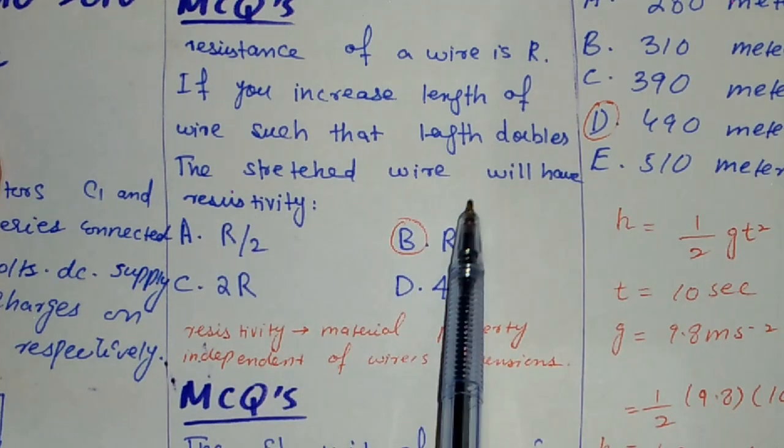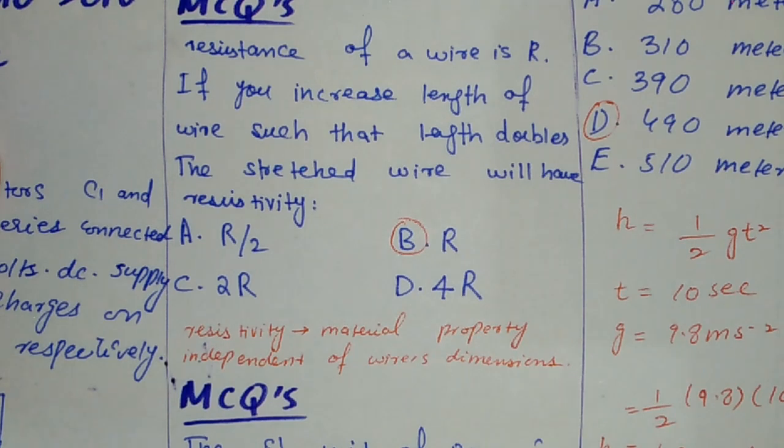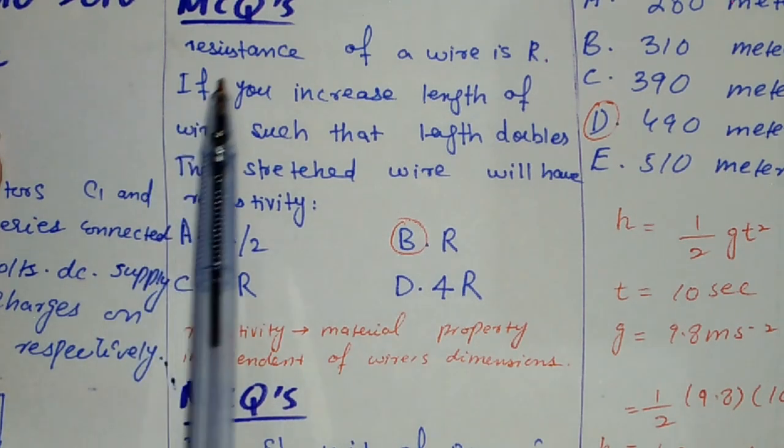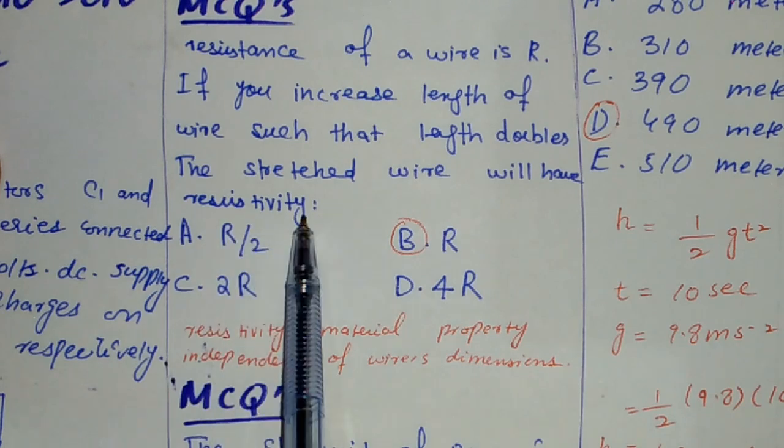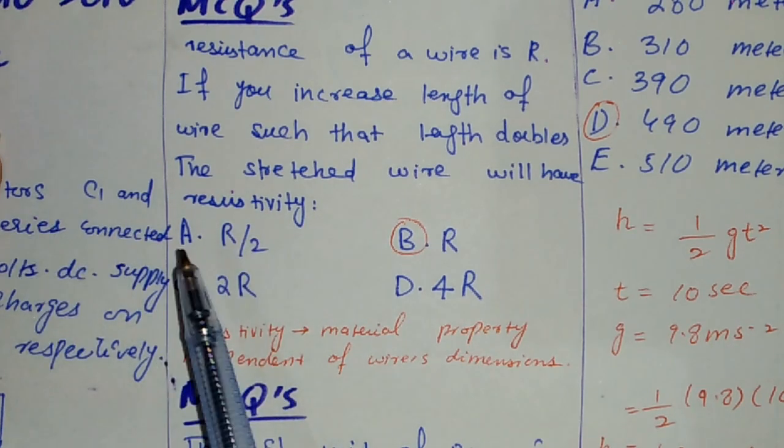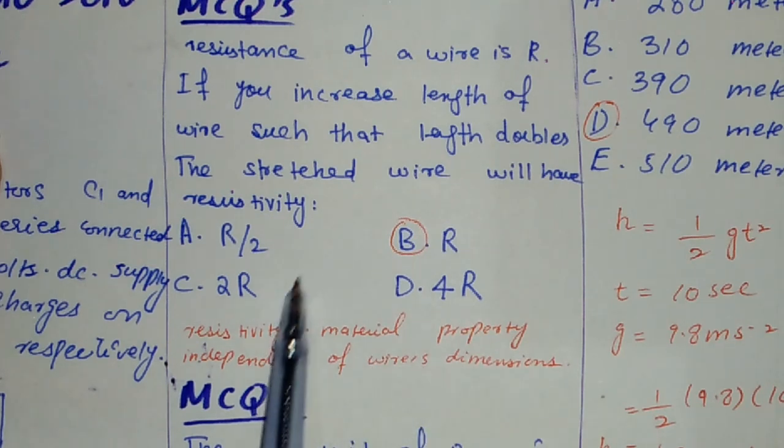You have to see it very carefully. They will talk about resistance and ask us about resistivity. That's the point to be noted here. Resistivity is a material property. It is the same. It does not depend on the wire dimensions.